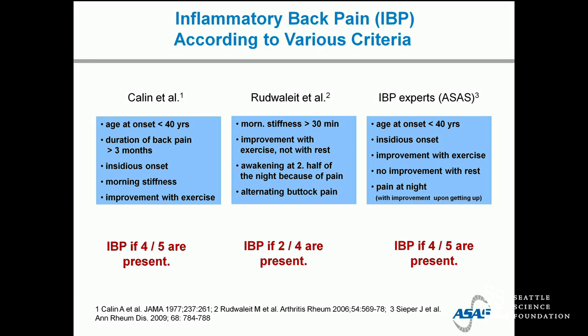Here are the IBP criteria we are currently using. They are: age at onset less than 40 years, insidious onset of symptoms, improvement with exercise, no improvement with rest, and pain at night. If you ask the patient whether they find themselves waking at 2 in the morning and getting out of bed, and they say, 'How did you know?' — that's the key. The patient gets up and walks around. No improvement with rest and improvement with exercise are among the most important elements, very different from what you expect with osteoarthritic or mechanical back pain.